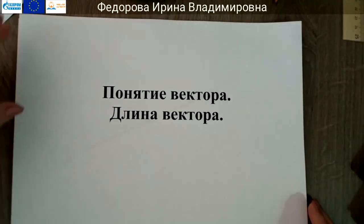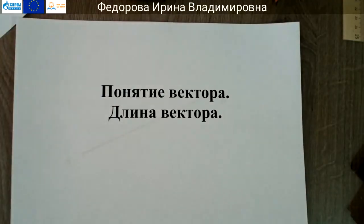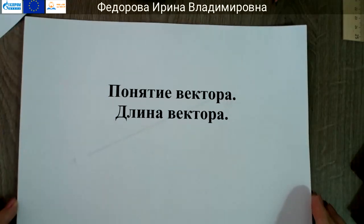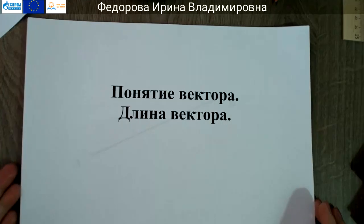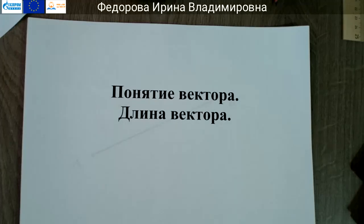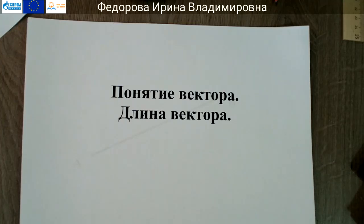Из курса математики предыдущих лет и физики вам известны некоторые величины, например: длина, площадь, масса, скорость и так далее. Величины бывают двух видов. Есть величины, которые определяются только численными значениями — например, длина, площадь, масса, плотность. Но есть величины, которые характеризуются не только численным значением, но и направлением в пространстве — например, скорость, сила, перемещение.